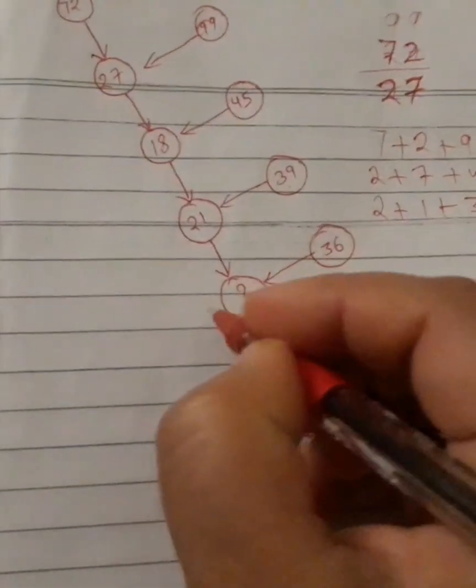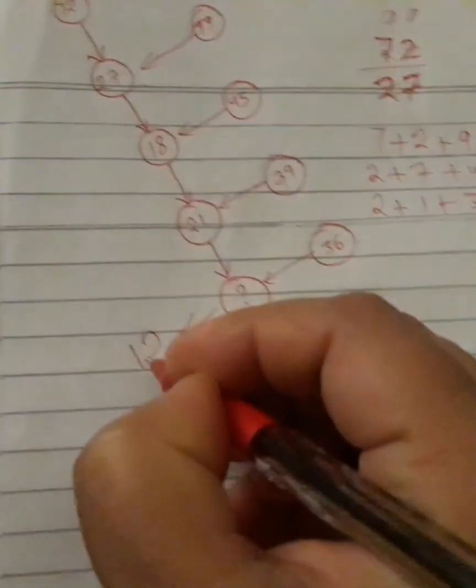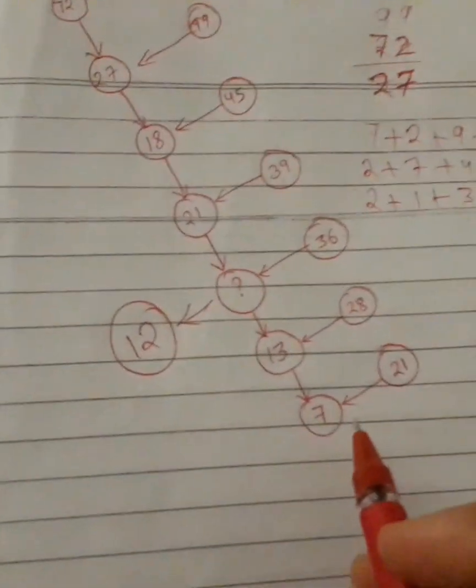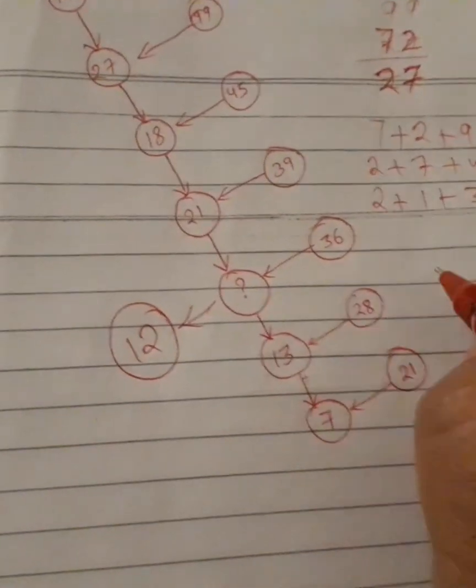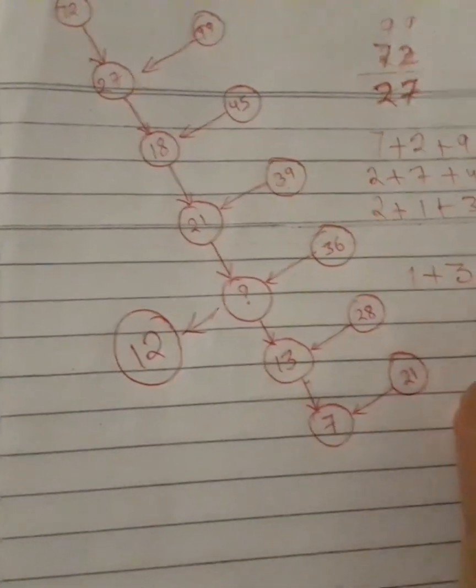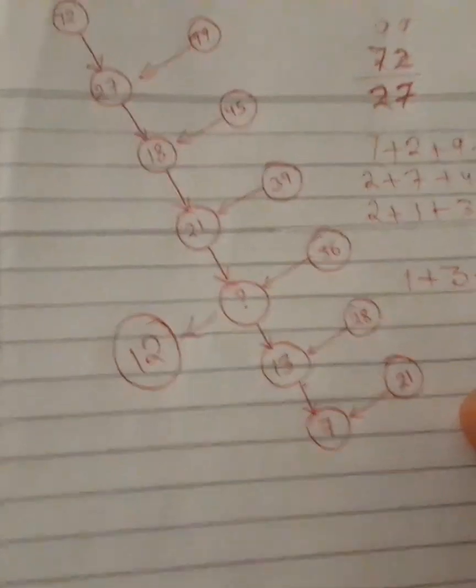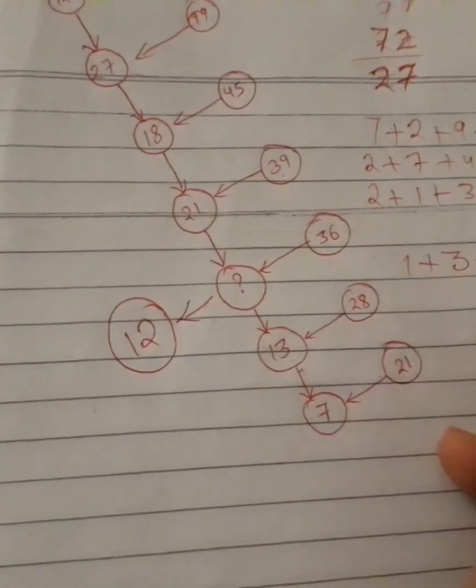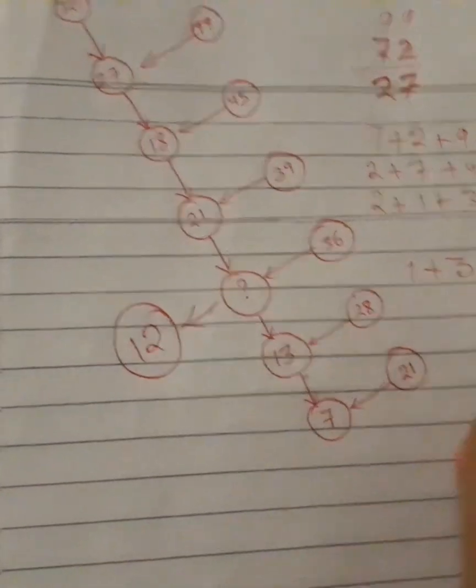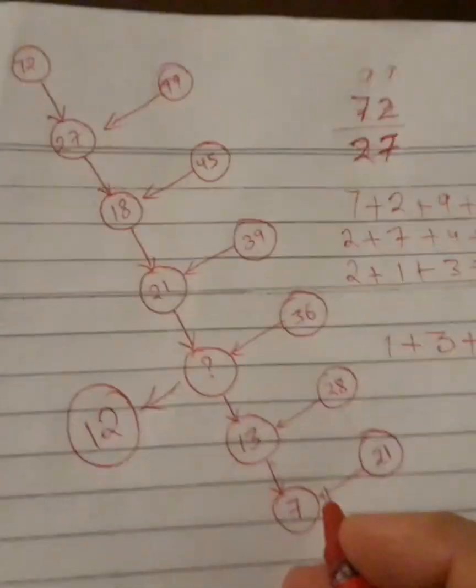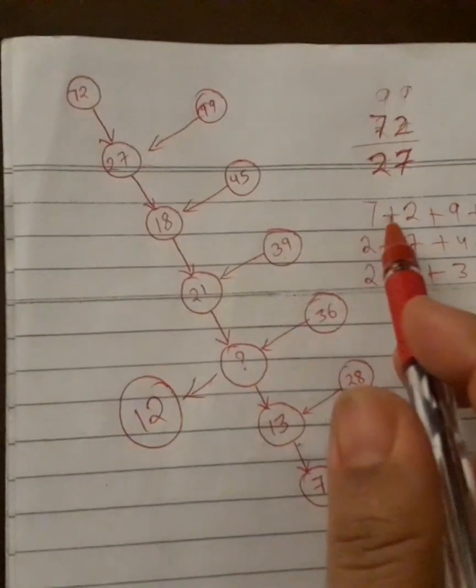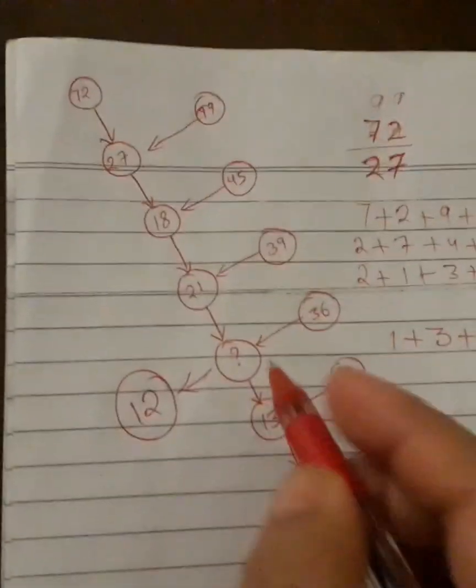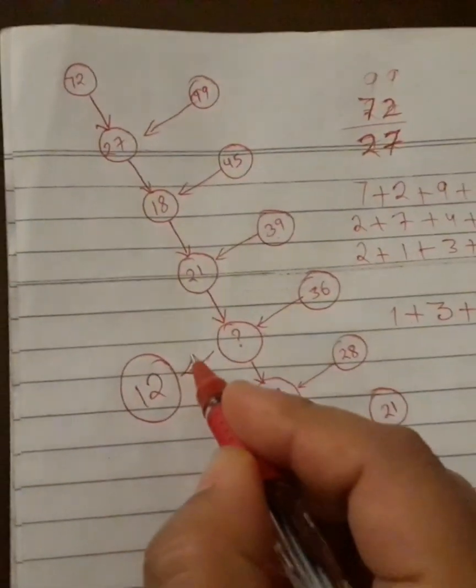We are getting question mark equals 12. And check whether 7 is coming or not. You can check it: 1 plus 3 plus 2 plus 1. 3 plus 2 is 5, 6, 7. So 7 is coming. The rule is going to be applied same here as adding the sum of digits. That's why our question mark is 12, friends.